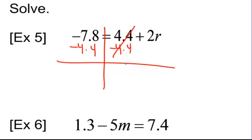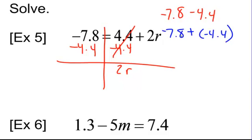That cancels. We're left with 2r. Now, here's where people usually make mistakes. Negative 7.8 minus 4.4. Let's write it like this. Negative 7.8 minus 4.4. Well, let's do keep change opposite. Now, we have negative 7.8 plus negative 4.4. Since they're both negative, we have to combine them. So we're actually going to add these together.